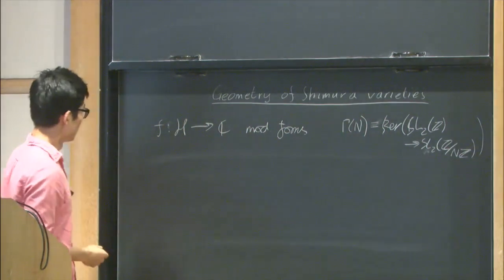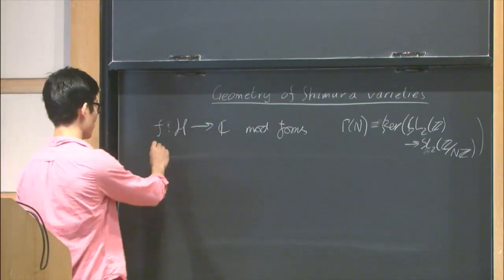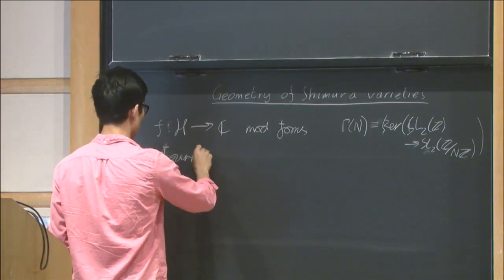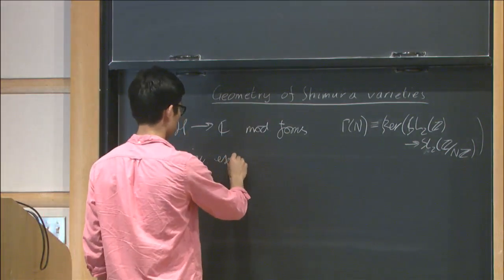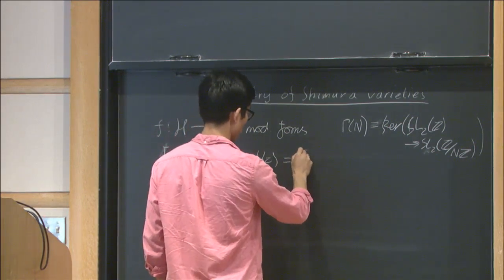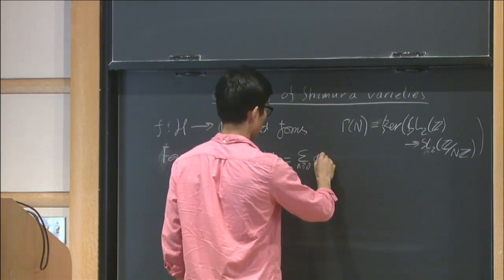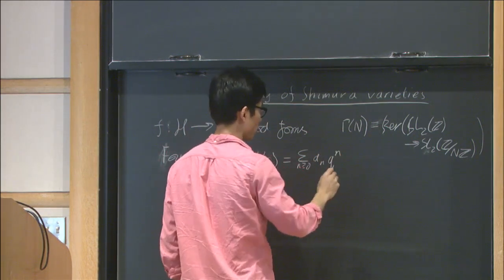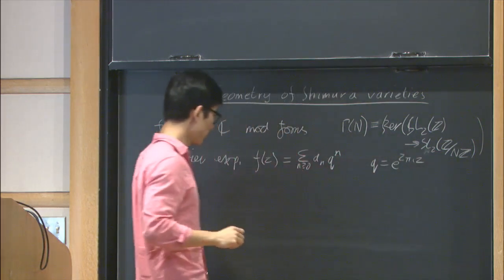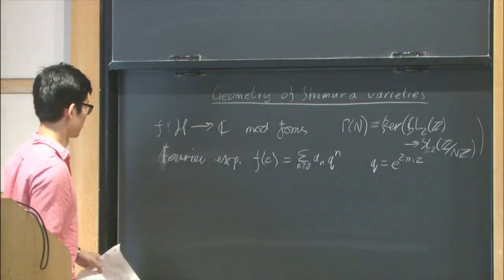These modular forms arose in the study of elliptic integrals, but people soon realized they had some very deep connection with number theory. People realized that if you look at the Fourier expansion of modular forms, you can write f(z) equals sum from n equals 0 to infinity of a_n q to the n, where q is e to the 2πiz. Very interesting arithmetic functions occur as Fourier coefficients of modular forms.